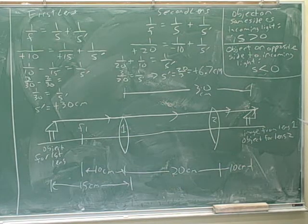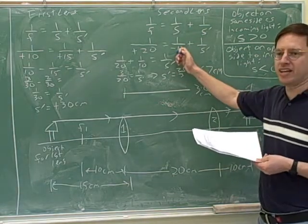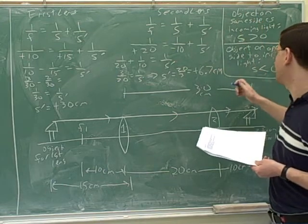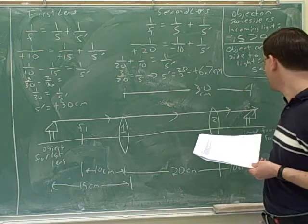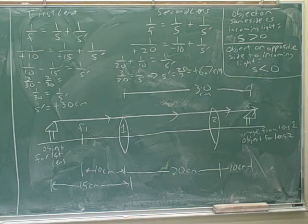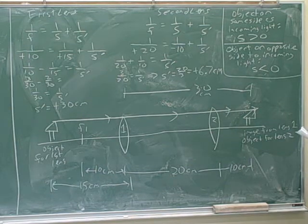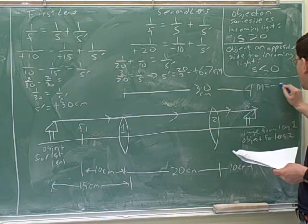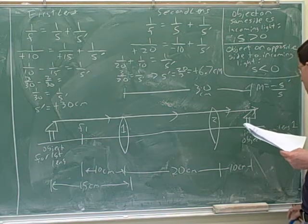One thing you might do is explain how you knew the object distance was negative 10 — because the object is on the opposite side of the incoming light. You have to explain where you're getting the values to put into the equation, and the picture is part of your explanation as well. So for part B: is the image inverted or upright, virtual or real? To figure out if it's inverted or upright, we look at magnification, which equals negative S prime over S. We know S prime is 6.7.